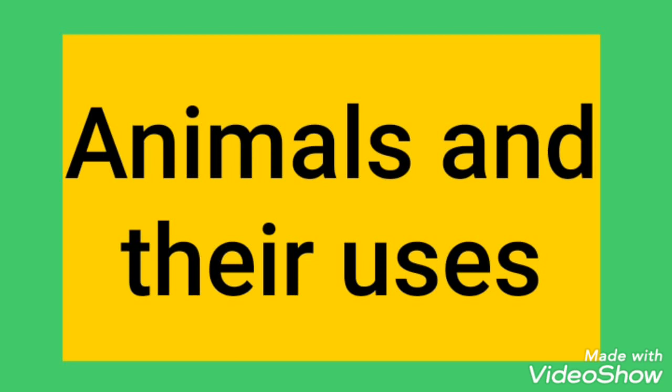The three groups of animal classification are domestic animals, wild animals, and pet animals. Now let us see each one by one along with pictures. First we are going to see domestic animals.